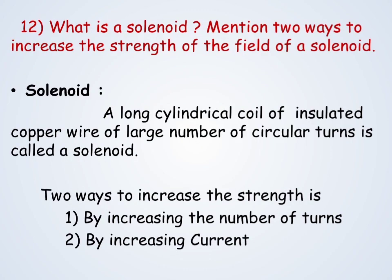What is a solenoid? Mention two ways to increase the strength of the field of a solenoid. A solenoid is a long cylindrical coil of insulated copper wire with a large number of circular turns. The ways to increase the strength of the field are: by increasing the number of turns of the coil, and by increasing the current in the solenoid.